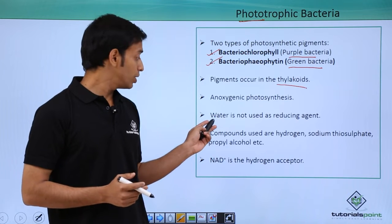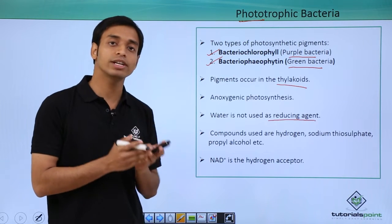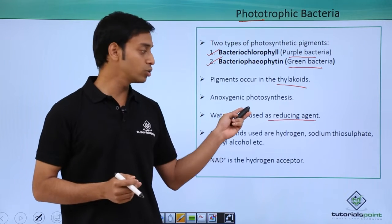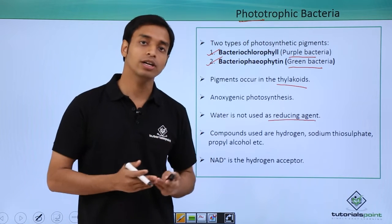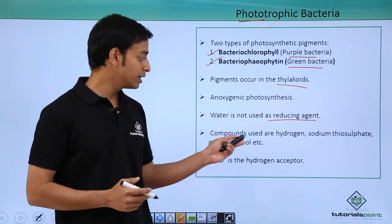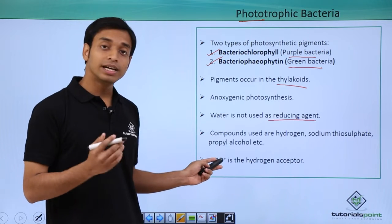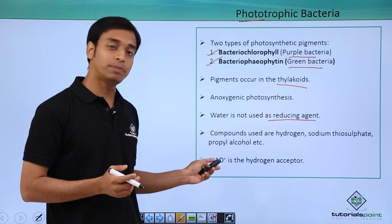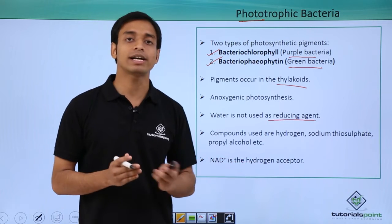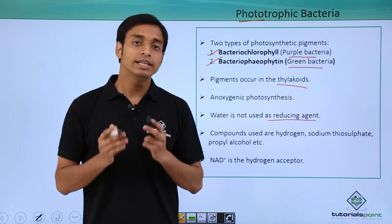In this process, water is not used as a reducing agent, unlike in most photosynthesis. These bacteria use different hydrogen sources which may be both organic or inorganic, such as sodium thiosulfate, propyl alcohol, etc. The hydrogen acceptors in this process are NAD+, that is nicotinamide adenine dinucleotide, which are the molecules that act as the hydrogen acceptor.